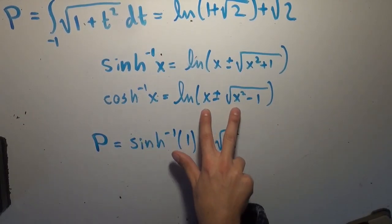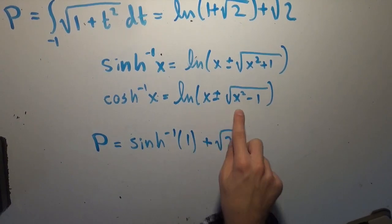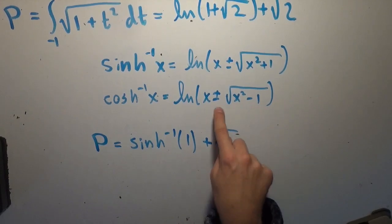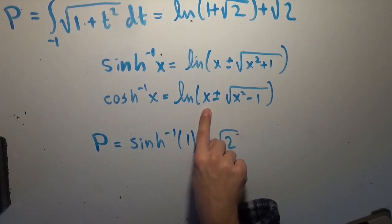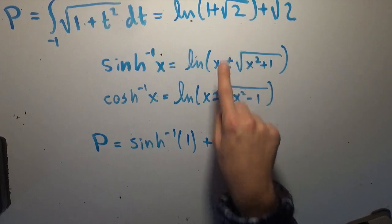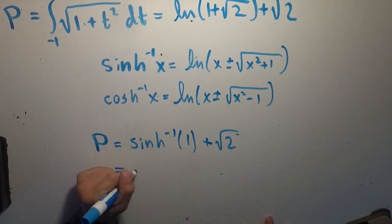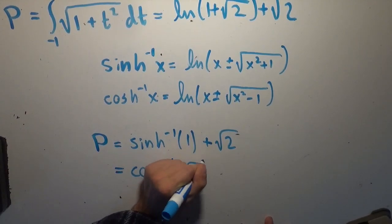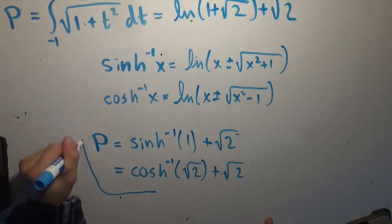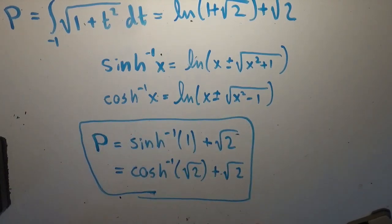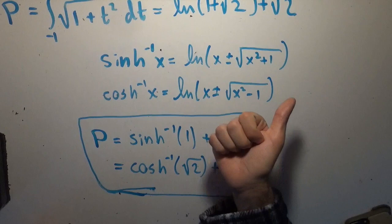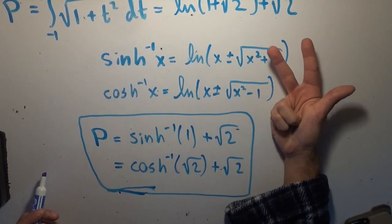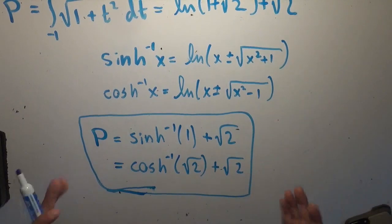In the same vein, we can plug the square root of 2 into the inverse hyperbolic cosine, because the square root of 2 squared is 2, minus 1 is 1, the square root of 1 is 1, and then the square root of 2 gives exactly the square root of 2 we want. So the universal parabolic constant is also equal to the inverse hyperbolic cosine of the square root of 2, plus the square root of 2. The universal parabolic constant — related to a parabola, solved using circle trigonometry — can be represented using hyperbolic functions. Absolutely brilliant.